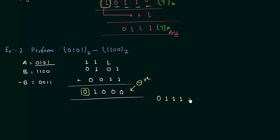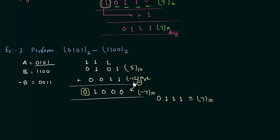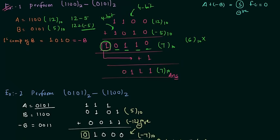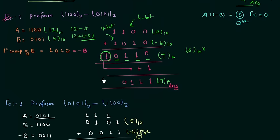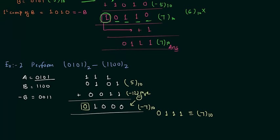Whenever the final carry is equal to zero, from step number three the result obtained in step number two is negative and in one's complement form. So 1000 is negative and in one's complement form. We invert this answer by taking the one's complement, giving us 0111. 0111 is 7 in decimal, meaning 1000 represents minus 7. You can cross-check: 0101 is 5 and 1100 is 12, so 5 plus minus 12 equals minus 7. When carry is 1 add it back; when carry is 0 just invert it.